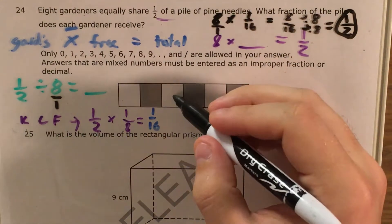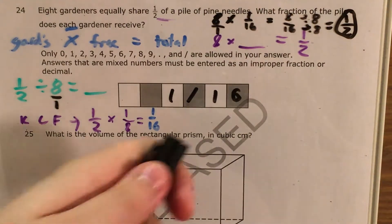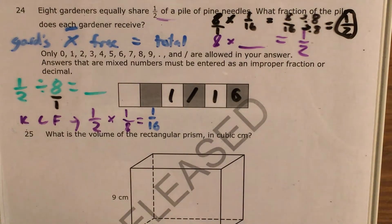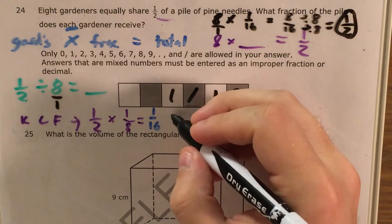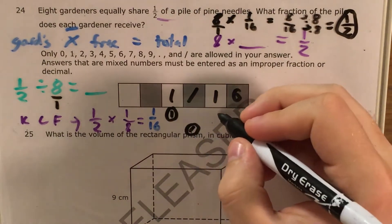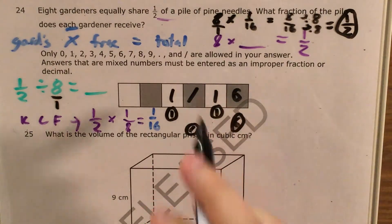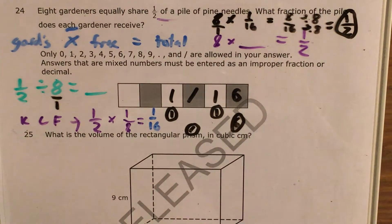Now that I've checked 1/16, I can plug it into my grid response boxes. I need to find my 1 bubble, my slash bubble, my 1 bubble, and my 6 bubble underneath each column, and bubble those in so the computer that grades my test will know that I did it right.